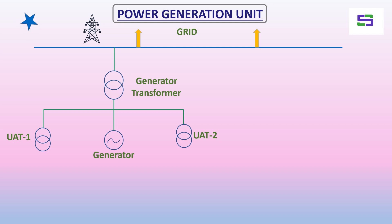This power will be tapped from the generator terminal itself. The connection between the generator and the generator transformer has a common tapping point, and generally this is an IPB — Isolated Phase Bus. So the power supply is tapped from there on the HV side of the UAT, and it will be stepped down.